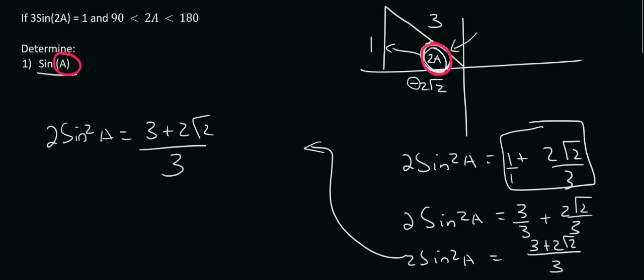Okay, so this is where we are at at the moment. Now, to get sin squared A by itself, you would have to divide that whole expression by 2. So what that means is that the 3 is going to be multiplied by 2, so that becomes a 6. Then we are almost done.